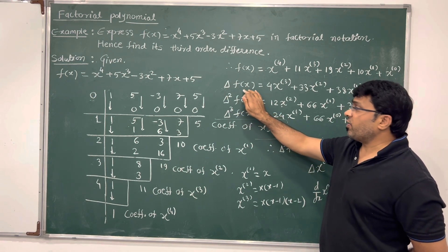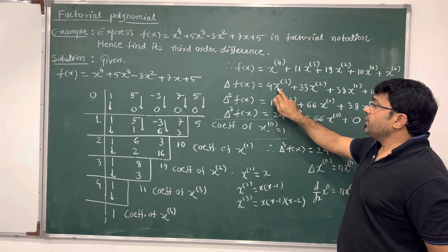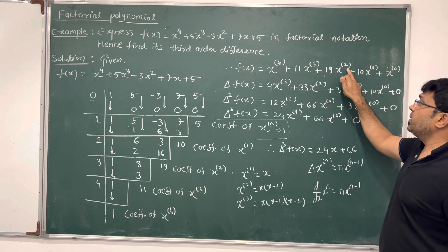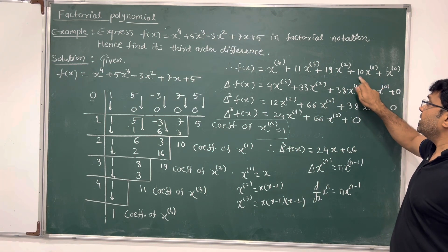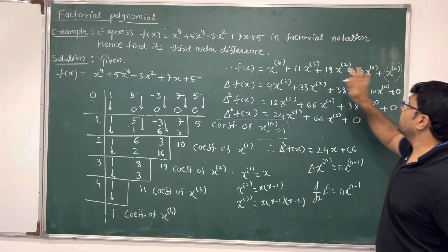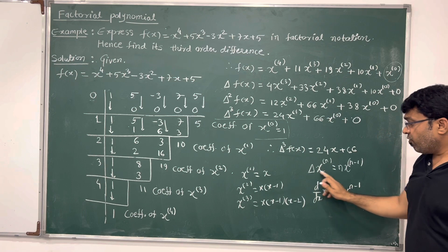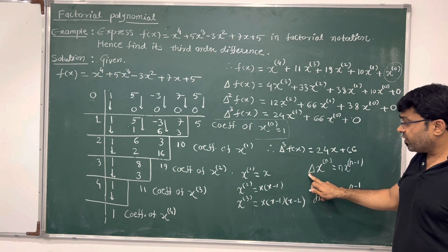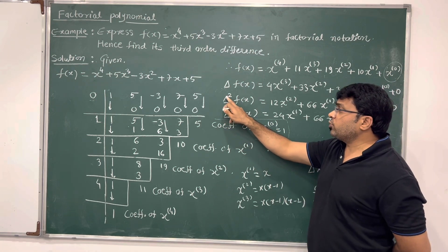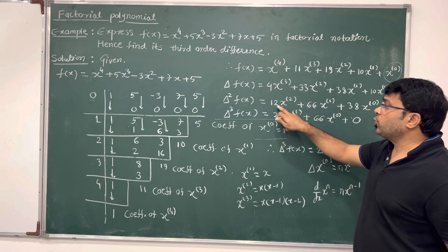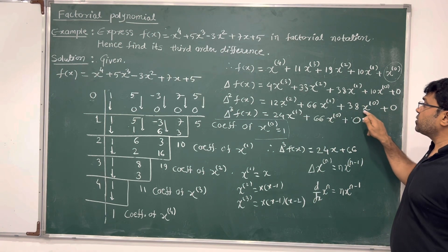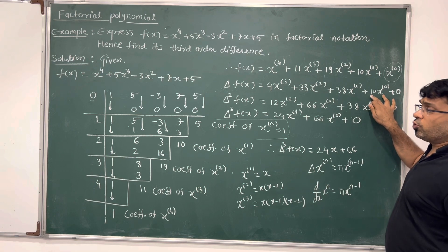Taking the first forward difference, delta of f(x) equals 4 times x to the power 3 factorial, plus 3 times 11 which is 33 times x to the power 2 factorial, plus 2 times 19 which is 38 times x to the power 1 factorial, plus 1 times 10 which is 10 times x to the power 0 factorial. The forward difference of the constant term x to the power 0 factorial is 0, just like the derivative of a constant.